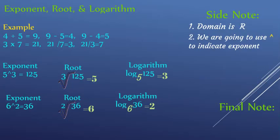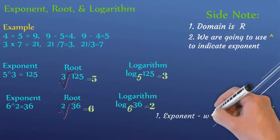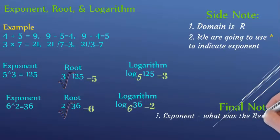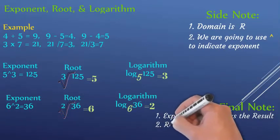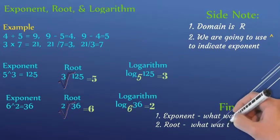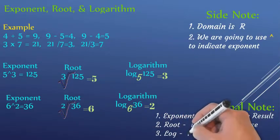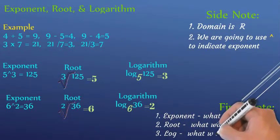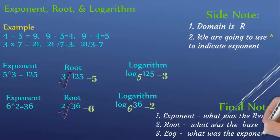So remember: exponents give you the result. The root asks: what was the base? The logarithm asks: what was the exponent? For example, two squared is four, five squared is 25, six squared is 36.